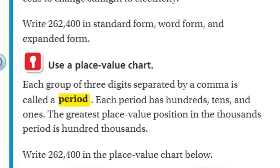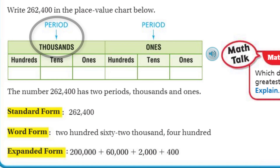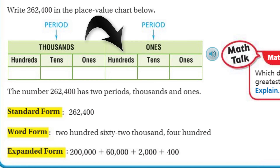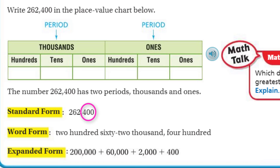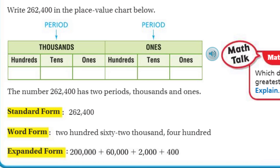Each group of three digits separated by a comma is called a period. Each period has hundreds, tens, and ones. The greatest place value position in the thousands period is hundred thousands. Let's write 262,400 in the place value chart. It shows us the ones period and the thousands period. The number 262,400 has two periods — thousands and ones — separated by that comma. Standard form refers to the way numbers are typically written.